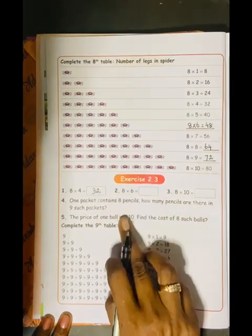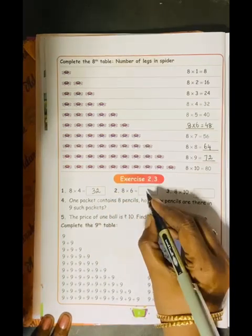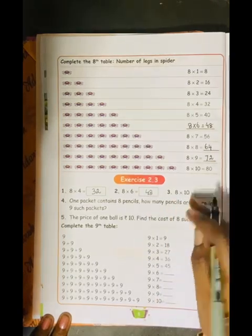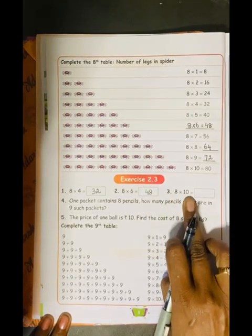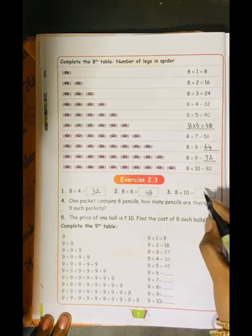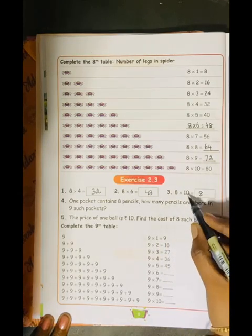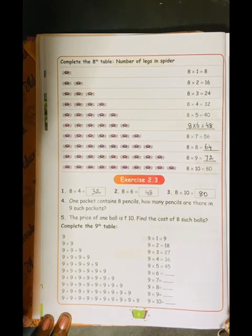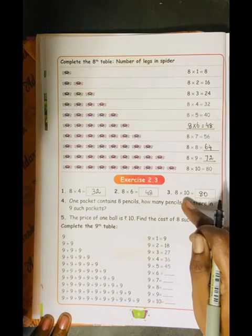You should be very thorough in the tables. 8 times 6 is 48. 8 times 10 is, what I said, whatever we are multiplying by 10, it is very easy. First, write the number. How many zeros check? 1 zero. So, write 1 zero. So, 8 times 10 is 80.